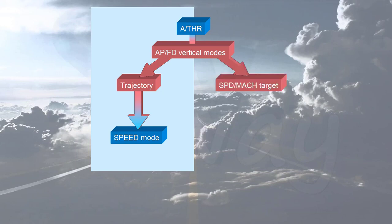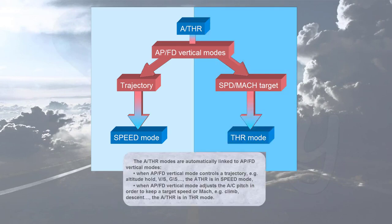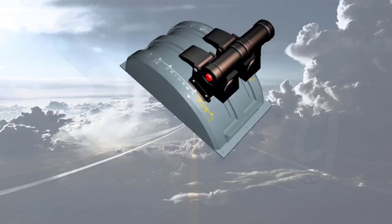When the autopilot flight director vertical mode adjusts the aircraft pitch in order to keep a target speed or Mach, for example during climb or descent, the autothrust is in thrust mode. The main autothrust controls available for the pilots are the thrust levers. On the Airbus fly-by-wire family, the autothrust does not back-drive the thrust levers while it adjusts the thrust.